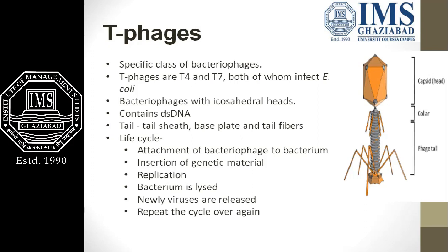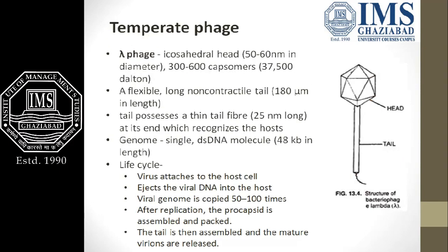T-phages, as soon as they infect the cell, start replicating and form a number of progeny viruses. Whereas temperate phages are non-virulent — they infect the host but live in a dormant state. When favorable conditions arise, they again become active and perform the lytic cycle, becoming virulent. Its life cycle consists of these phases.